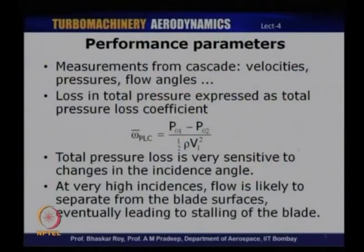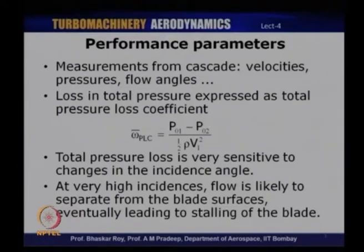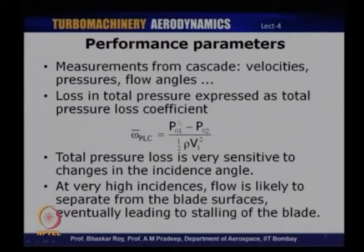Let us first talk about the total pressure loss coefficient. In a cascade, various measurements that one can carry out include velocities and their different components, total pressures, static pressures, as well as flow angles. From these measurements, one of the parameters we can derive is the total pressure loss coefficient. This is basically an indication of the loss in total pressure that one is likely to encounter in a particular cascade. Total pressure loss coefficient is defined as (P₀₁ − P₀₂) divided by (½ρV₁²), where P₀₁ is the total pressure at the inlet, P₀₂ is the total pressure at the exit or trailing edge, and the denominator is the dynamic pressure at the inlet.